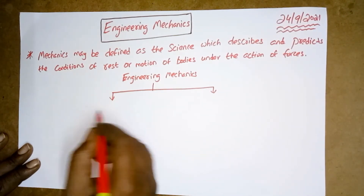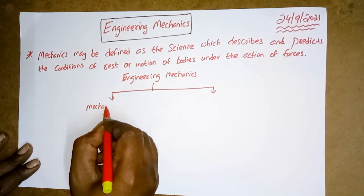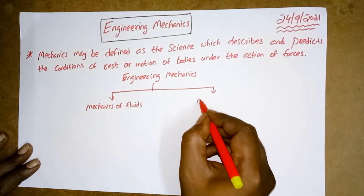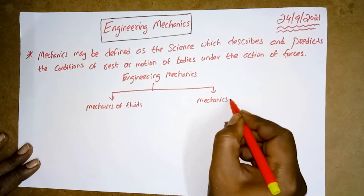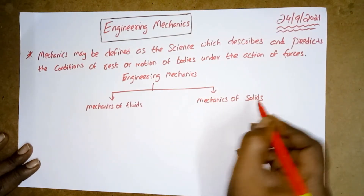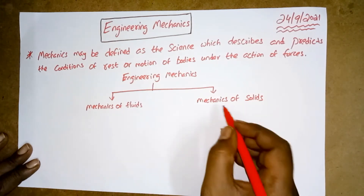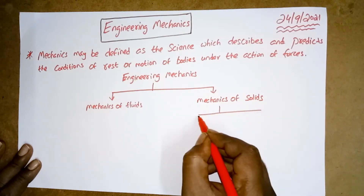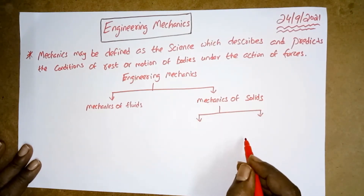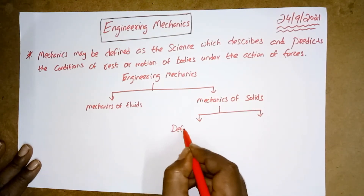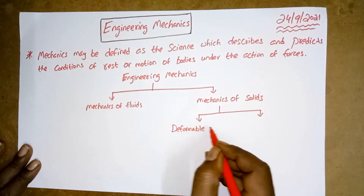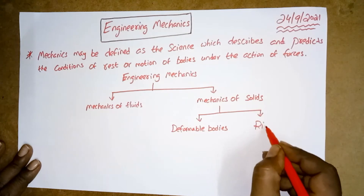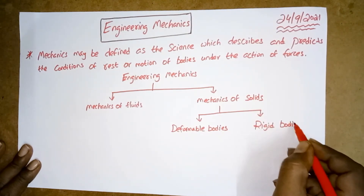First is mechanics of fluids and next is mechanics of solids. Again, this mechanics of solids can be classified into two types: first is deformable bodies, and next is rigid bodies.